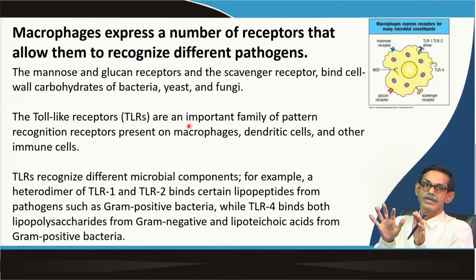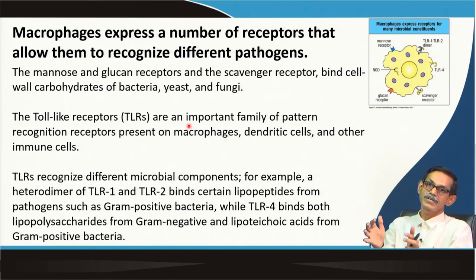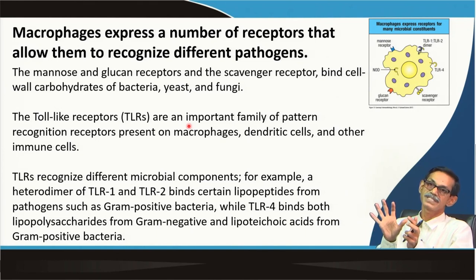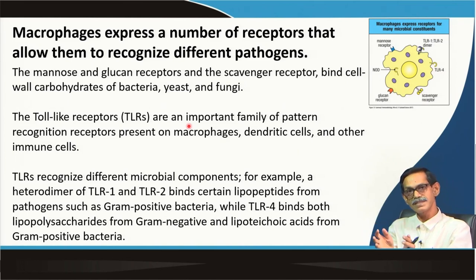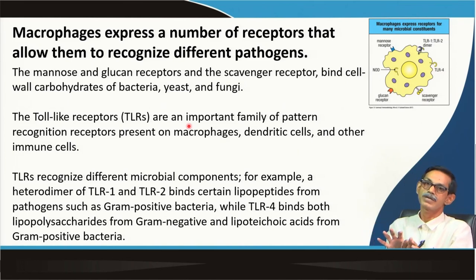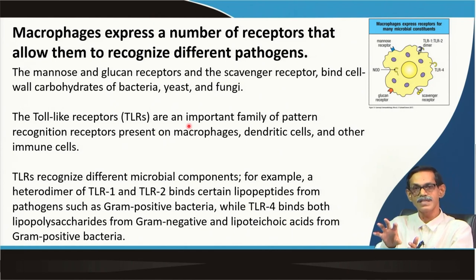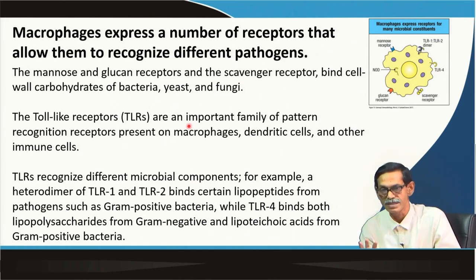LPS and lipoteichoic acid are not present in our own cells. So if there is a receptor in a macrophage which can recognize those, it can immediately figure out that whatever cells or organisms have entered are not our own cells. That receptor can recognize them and get the signal that they are foreign.